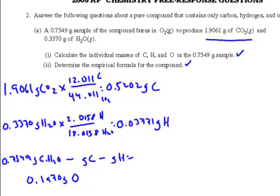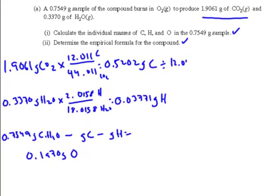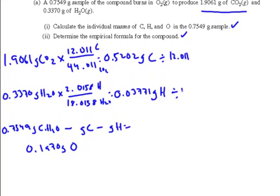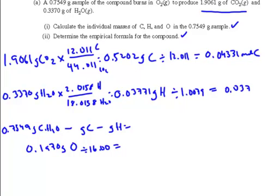In order to find the empirical formula, we have to find our ratio of moles, so we divide by our molar mass. We divide by 12.011 g/mol for carbon, 1.0079 g/mol for hydrogen, and 16.00 g/mol for oxygen. When we do this for each element, we get our individual moles — .03741 moles of hydrogen and .01231 moles of oxygen.